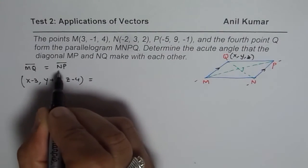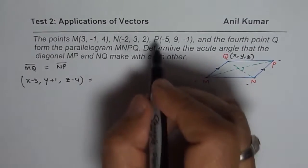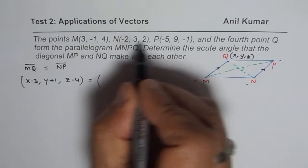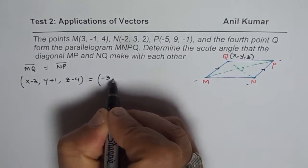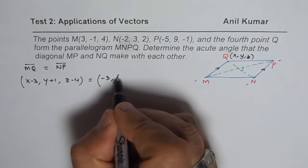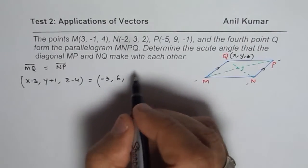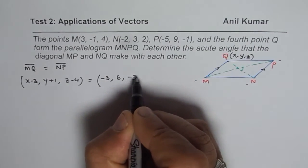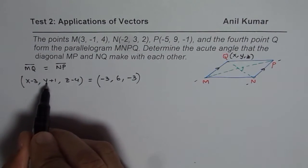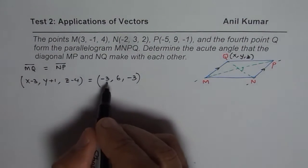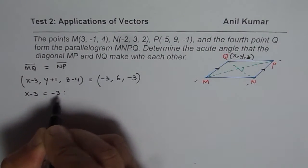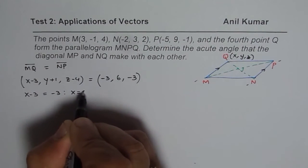And this should be equals to NP. So N to P, which is (-5 - (-2) = -3, 9 - 3 = 6, -1 - 2 = -3). So that is what you get. So from here, you can find what x is, what y is, and what z is. So we get three different equations. First one is x - 3 equals to -3. And that gives you x equals 0.